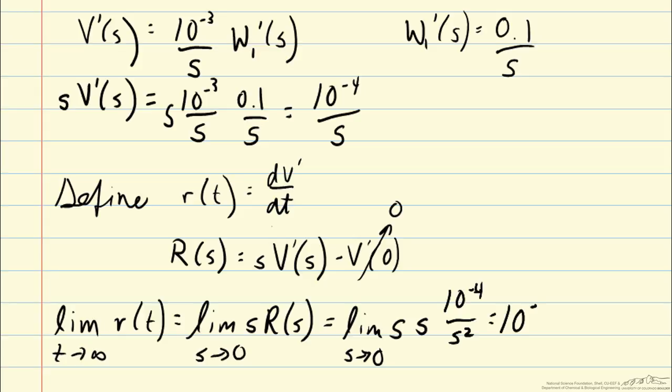And that's equal to 10 to the minus 4 meters cubed per second. So this now is a bounded value and it tells us that the long time value is 10 to the minus 4. Now we really knew that based on our inlet flow rate, but we are able to define this new variable r(s) for which we can apply the final value theorem. And that will be helpful later when we look at multivariable control.